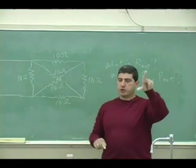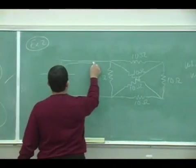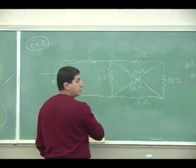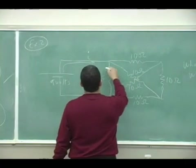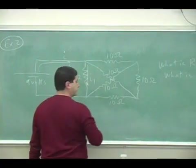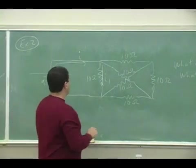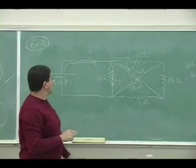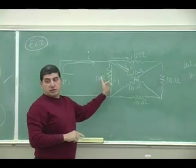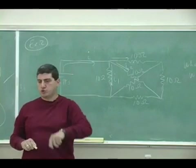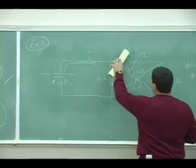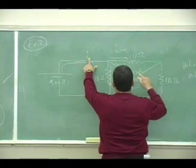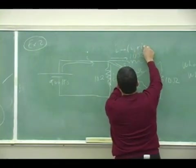Here's how we would do it. We use Kirchhoff's rules. What we do is assume that there's a current here. Let's call it I. And then we follow the steps of how it's breaking up. So let's say the I is breaking up into I1 and I2. And this one I'm going to call I minus I1 plus I2, so that I don't have to introduce a third variable.